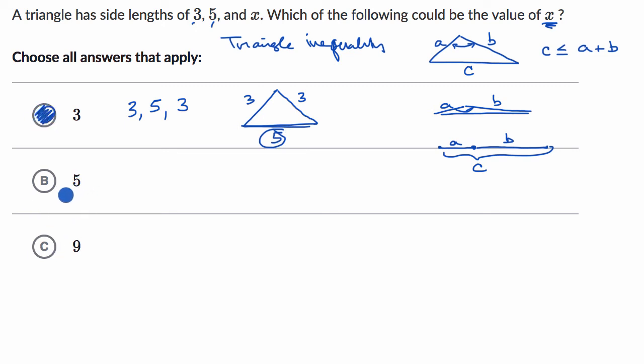Now what about five? Well that would imply a triangle that has side lengths three, five, and now x is going to be five again. We could try to visualize that.